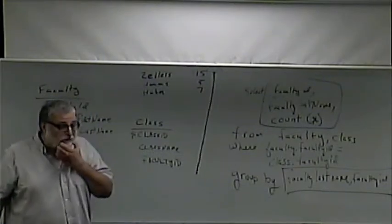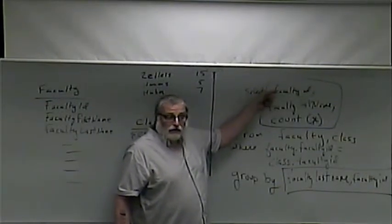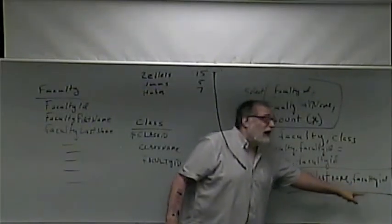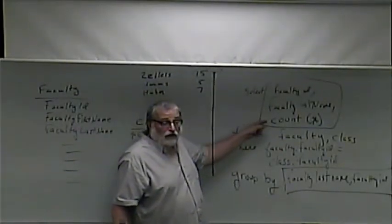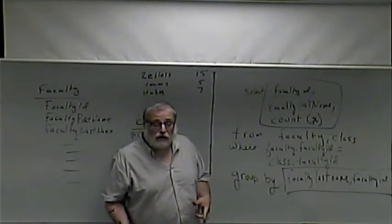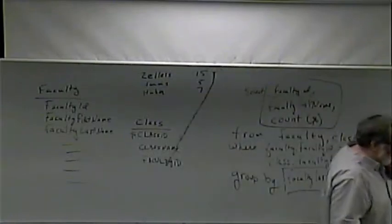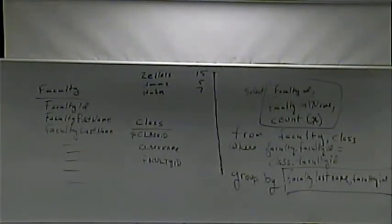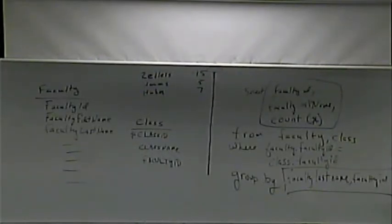All three fields in the SELECT are either in the GROUP BY or are an aggregate function. Let's figure out what happens if that isn't true. Say the GROUP BY is only faculty_last_name. There are two Zellerses: faculty ID 1 is Joe Zellers, faculty ID 2 is Mike Zellers. If I say give me faculty_ID, faculty_last_name, and the count — but break it down only by last name — then the subtotal for Zellers is five. Which faculty ID is associated with that? We don't know. SQL doesn't know what to do.